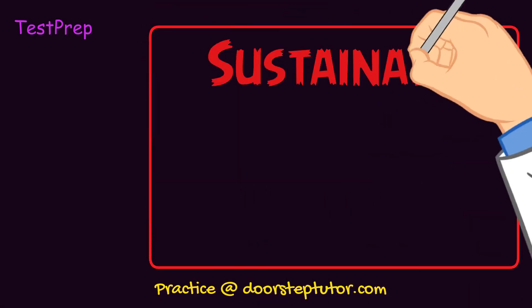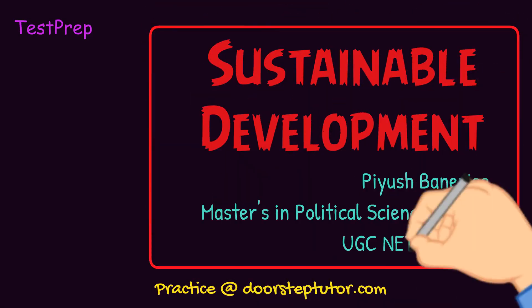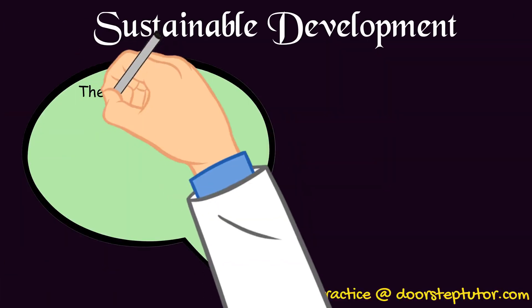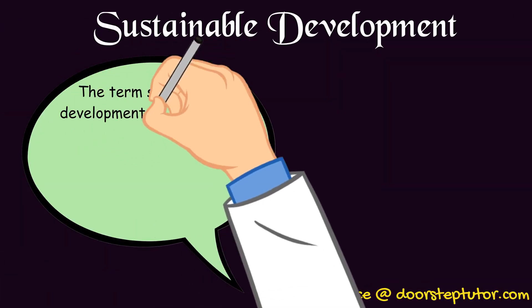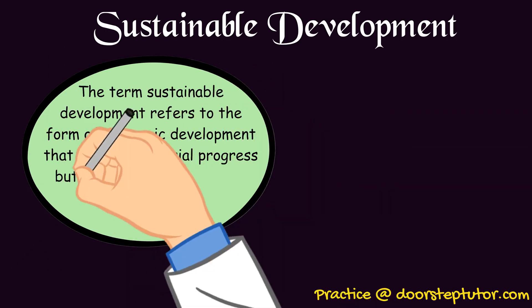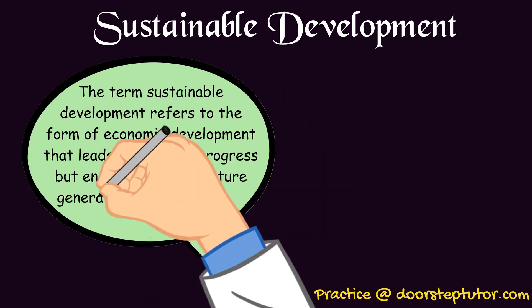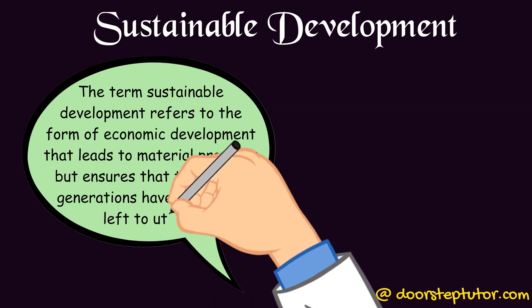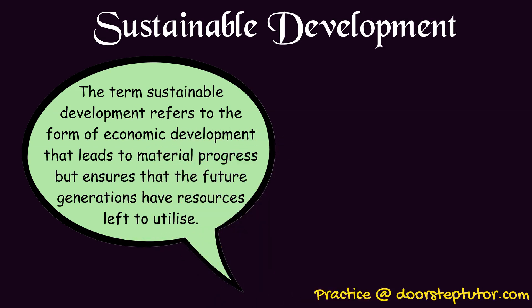Hello everyone. Today we are going to speak about sustainable development. The term sustainable development refers to the form of economic development that leads to material progress but ensures that the future generations have some resources left to utilize. It is an organizing principle whereby human development goals are achieved while simultaneously sustaining the ability of natural systems to provide natural resources on which the economy and the society depend.